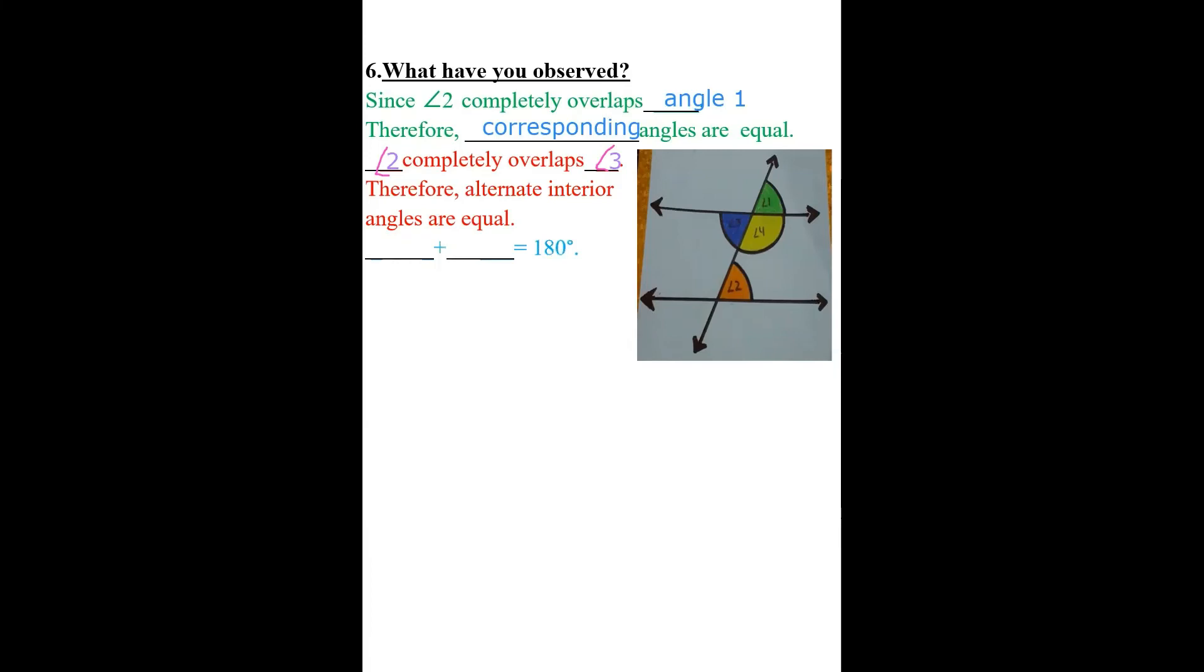And the third observation was angle 2 plus angle 4 was giving us the straight angle. What two angles were giving us the straight angle? Angle 2 plus angle 4. These two angles, angle 2 and angle 4, they were giving us 180 degrees. That's the reason we can say they are co-interior. Therefore, co-interior angles are supplementary. These observations we did from figure two, three and four.